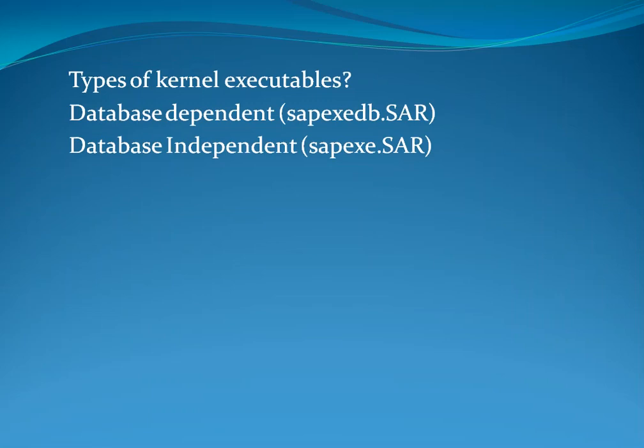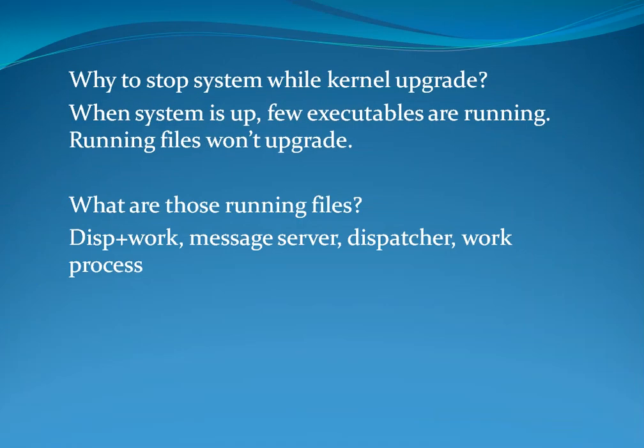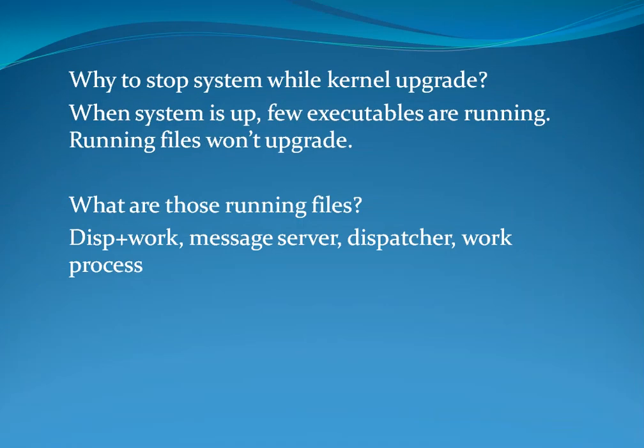Types of kernel executables are database dependent and database independent. Why stop the system during a kernel upgrade? When the system is up, a few executables are running, and running files won't be upgraded. Those running files are: disp+work, message server, dispatcher, and work process.